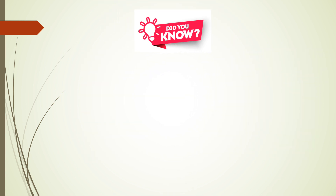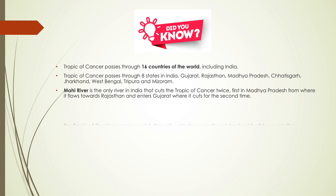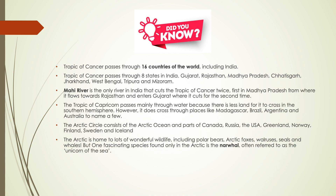The Tropic of Cancer passes through 16 countries of the world including India. It passes through eight states in India — they are Gujarat, Rajasthan, Madhya Pradesh, Chhattisgarh, Jharkhand, West Bengal, Tripura, and Mizoram. The Mahi river is the only river in India that cuts the Tropic of Cancer twice — first in Madhya Pradesh, from where it flows towards Rajasthan, and then enters Gujarat where it cuts the Tropic for the second time.